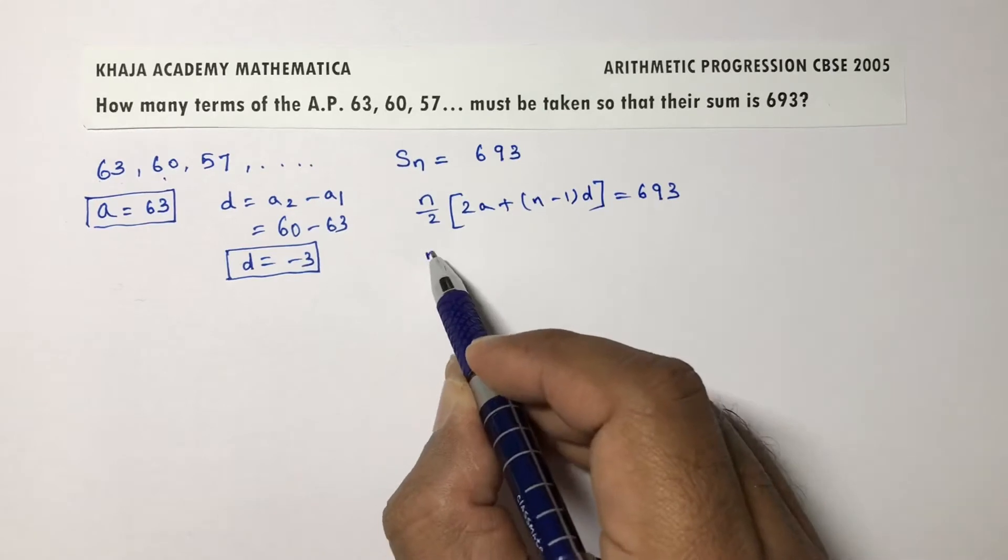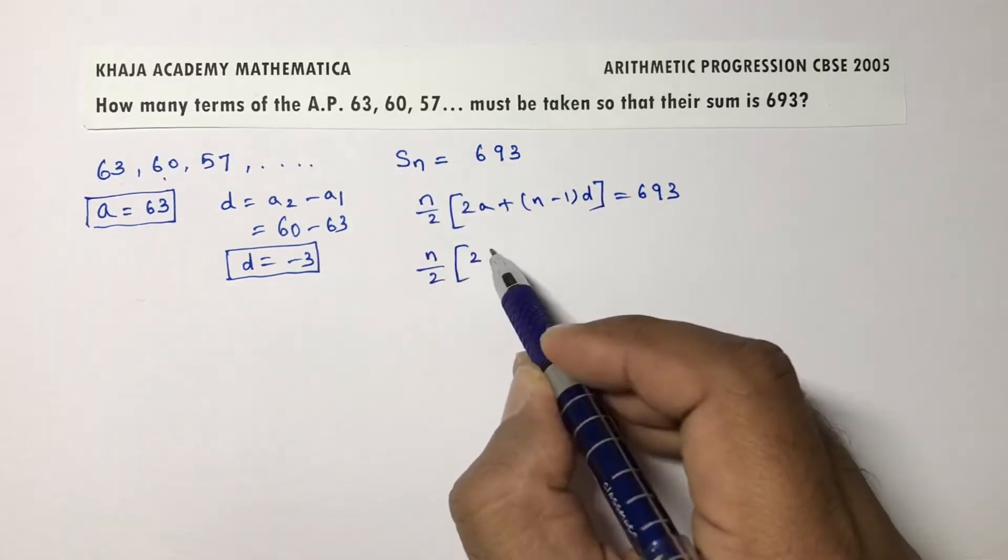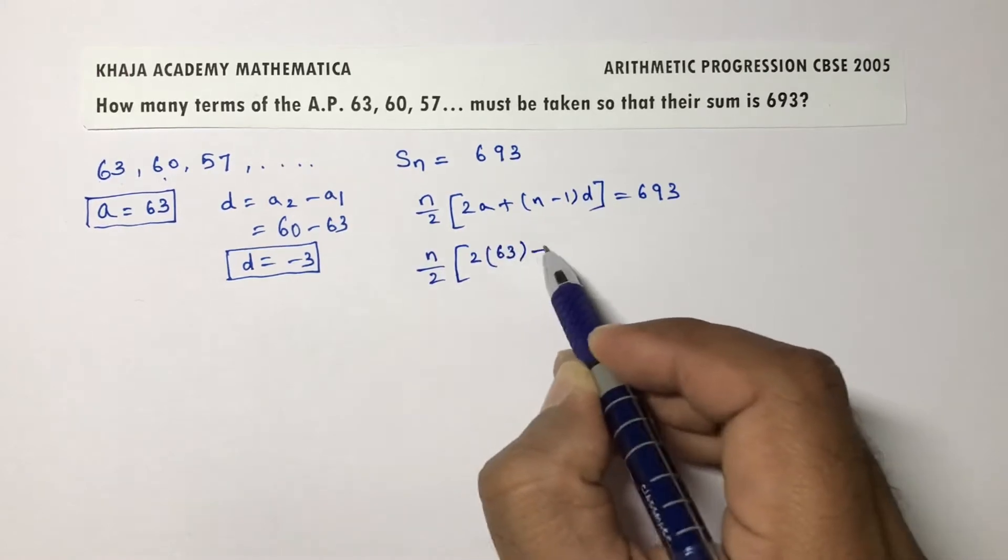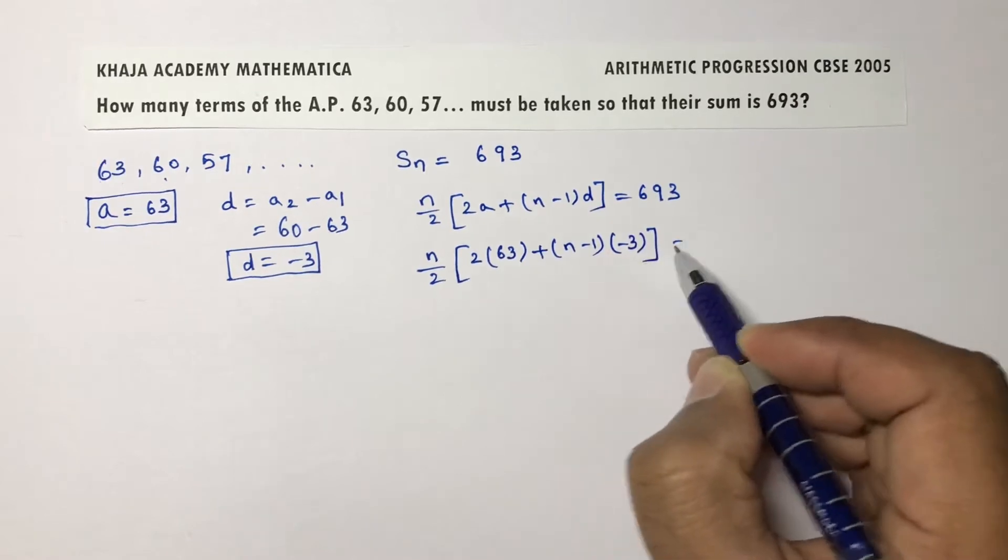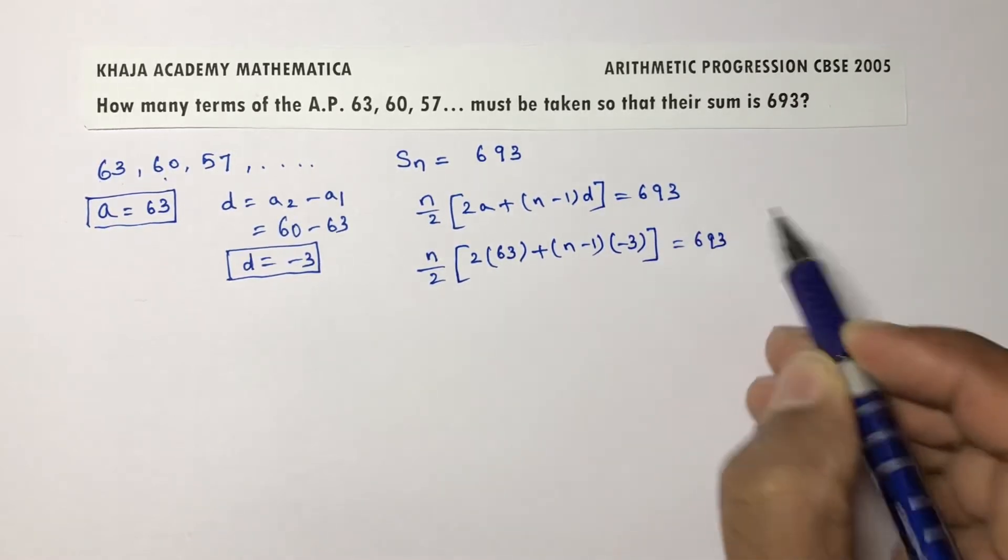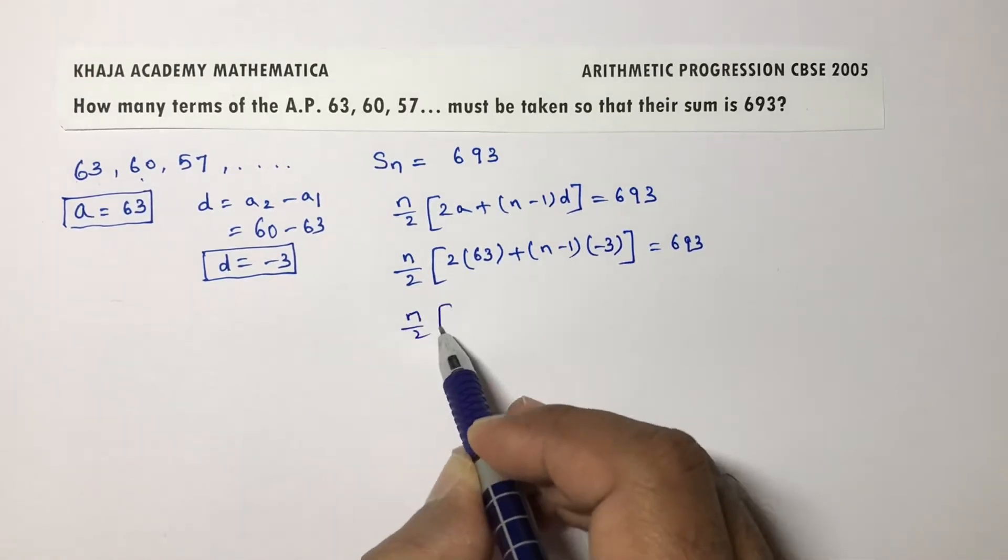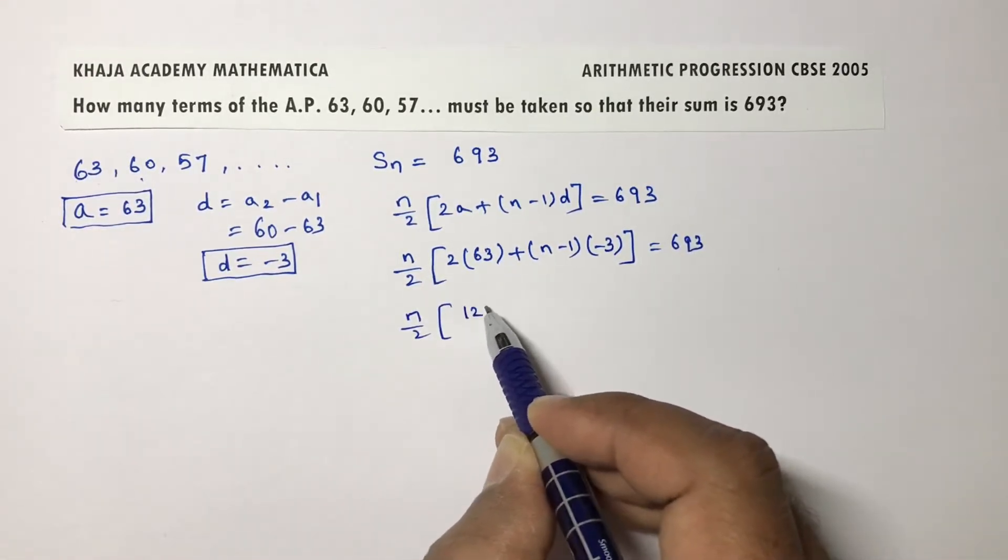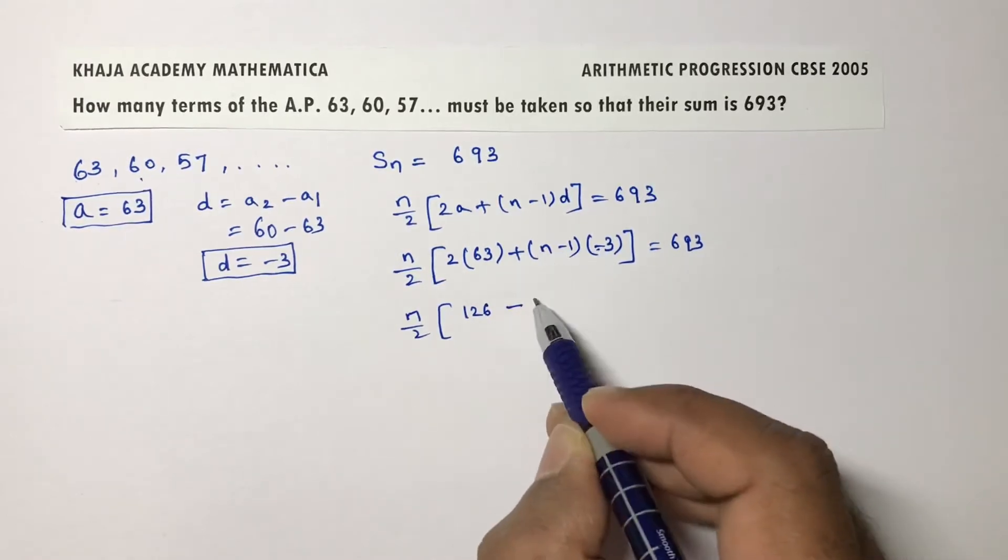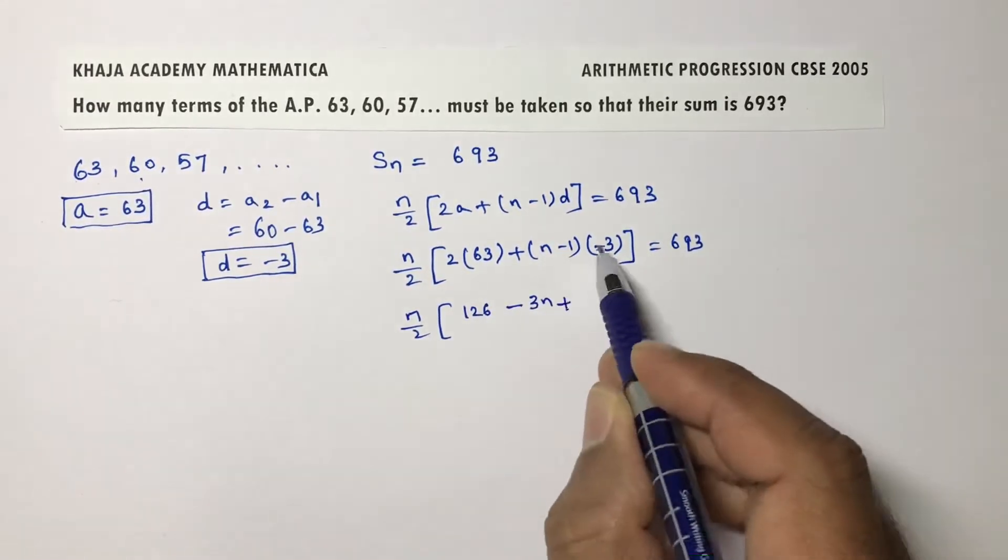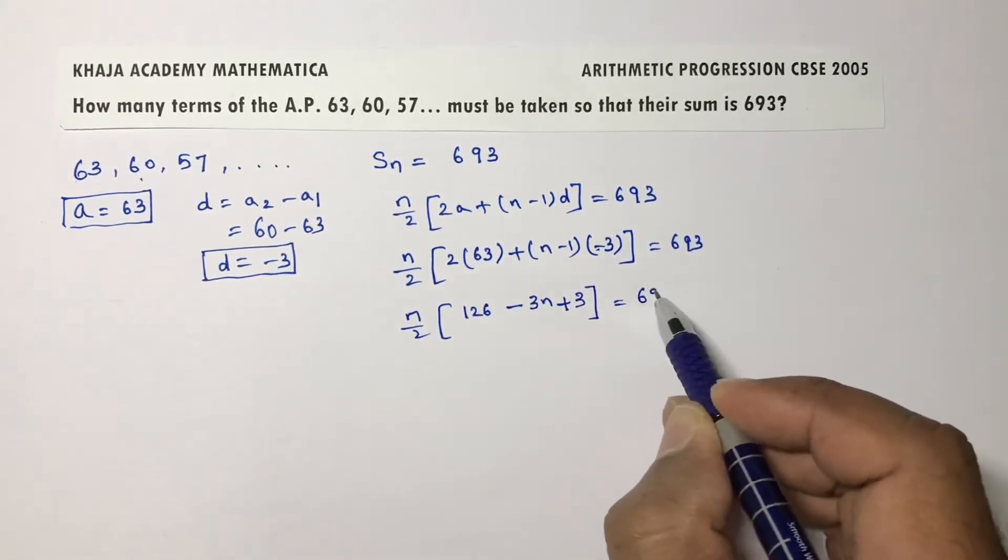Now substitute the values of a and d. n by 2, 2a which is 63 plus n minus 1 into d is minus 3 equals 693. Now n by 2, 2 into 63 is 126, minus 3 into n minus 3n plus 3 is 693.